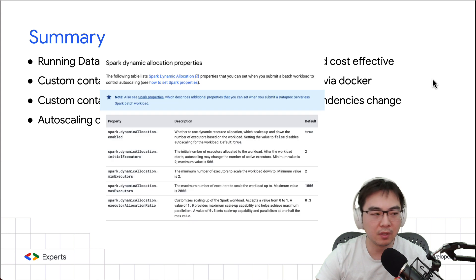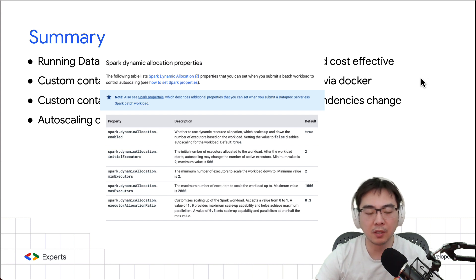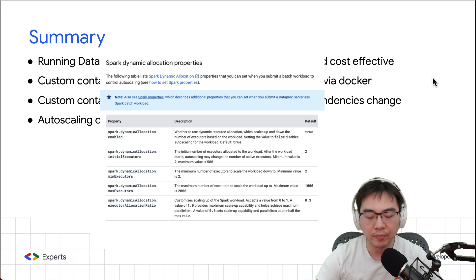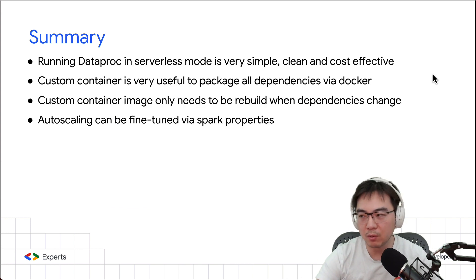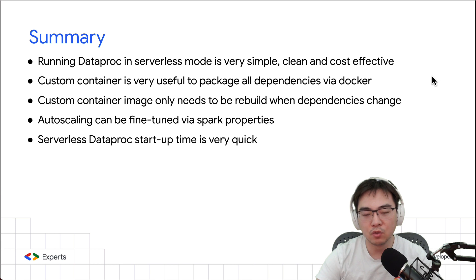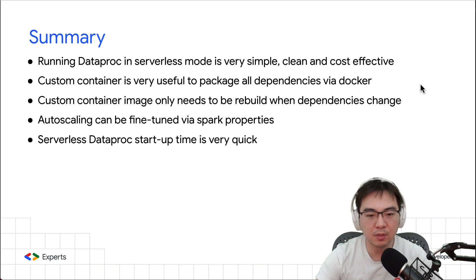Autoscaling can be fine-tuned via Spark properties — you can control how aggressive you want the autoscaler to be, and set minimum and maximum worker counts. You can also use other Spark properties beyond Google's listed recommendations. In my demo it scaled up only a little because the total word count job only took five minutes. I was actually quite surprised that serverless Dataproc startup time is quicker than the normal cluster — it typically starts in around 60 seconds once everything is set up properly with the right permissions, which is very quick.